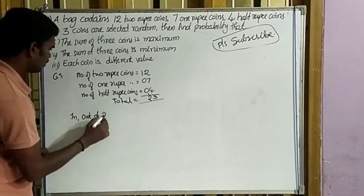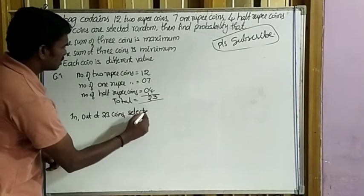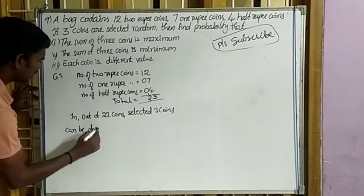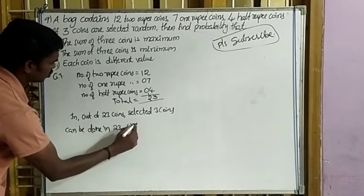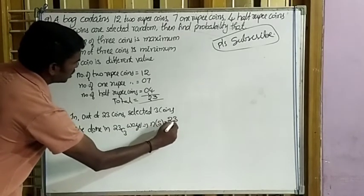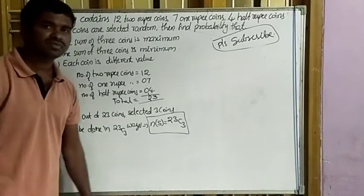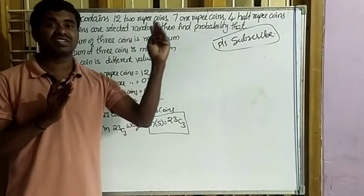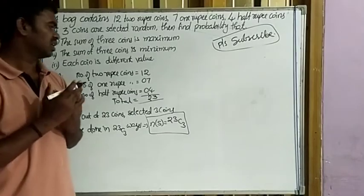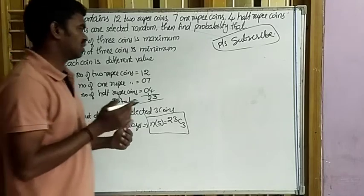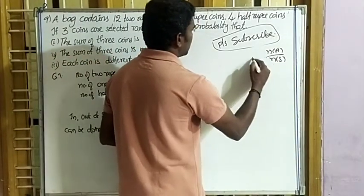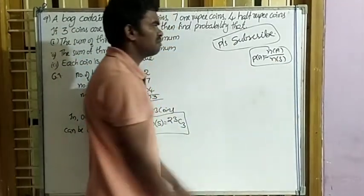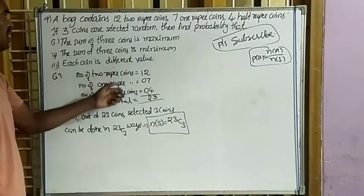Out of 23 coins, 3 coins are selected. The number of ways this can be done is 23C3. So N(S) = 23C3. Probability of event A = N(A) / N(S).